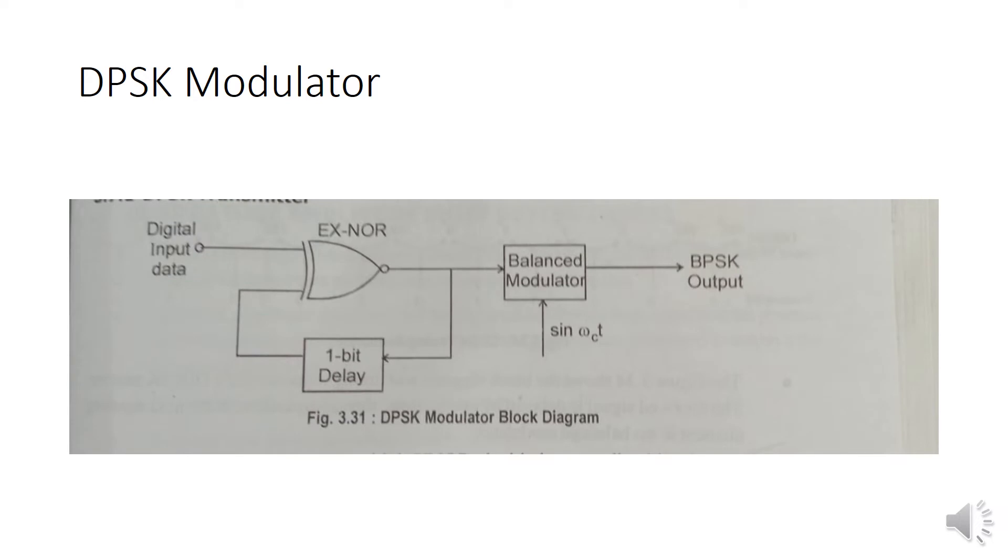So this is the block diagram for the DPSK modulator. In this block diagram, we have the digital input data connected to the XOR gate, then one bit delay connected to the balanced modulator. Here we are giving sin omega CT as the signal, then finally we will get the DPSK output signal.